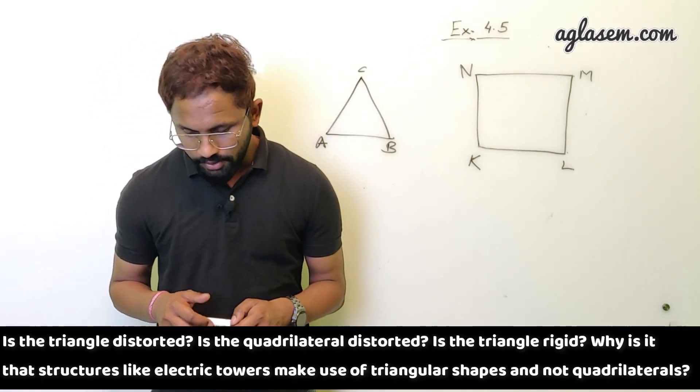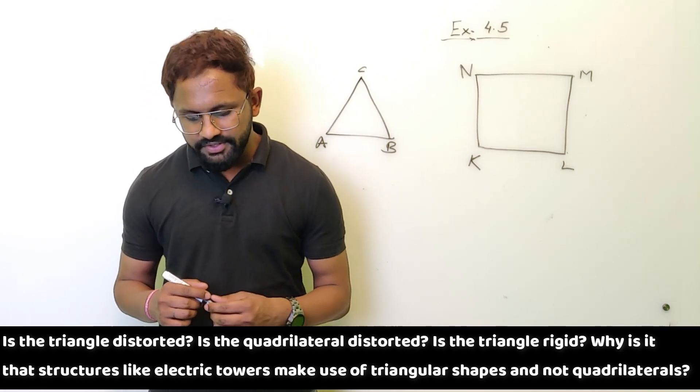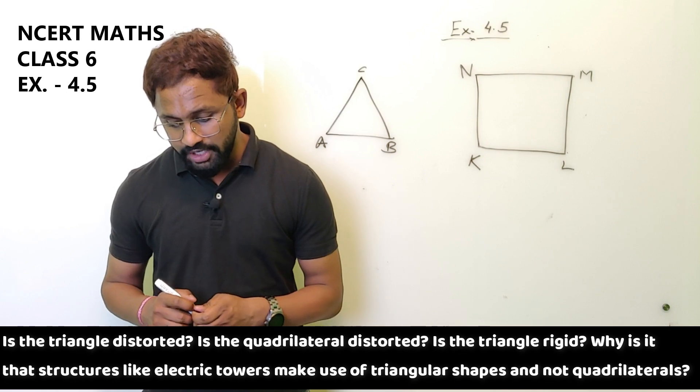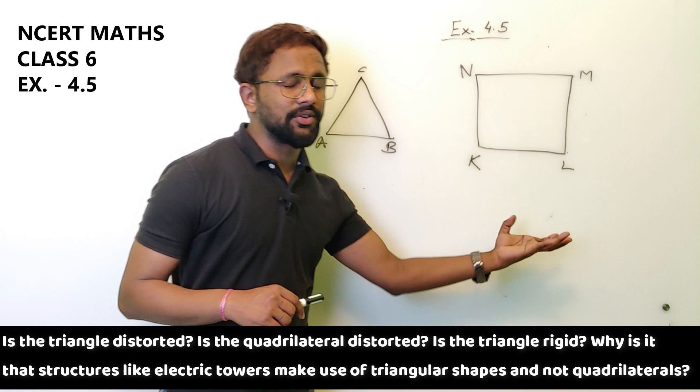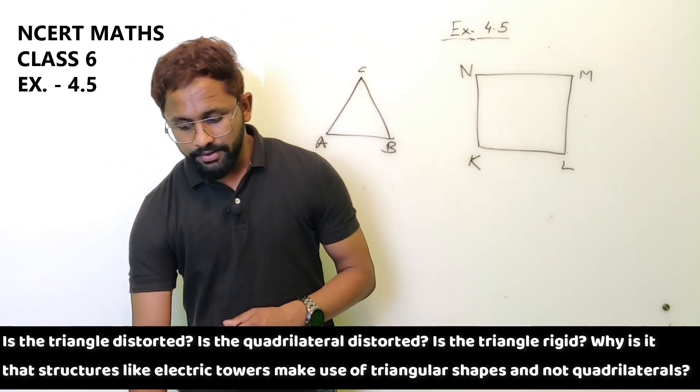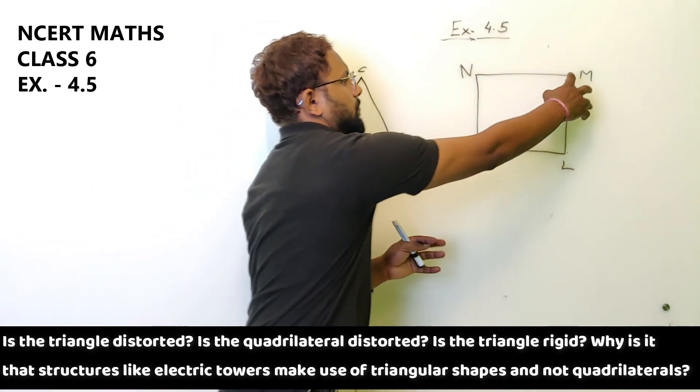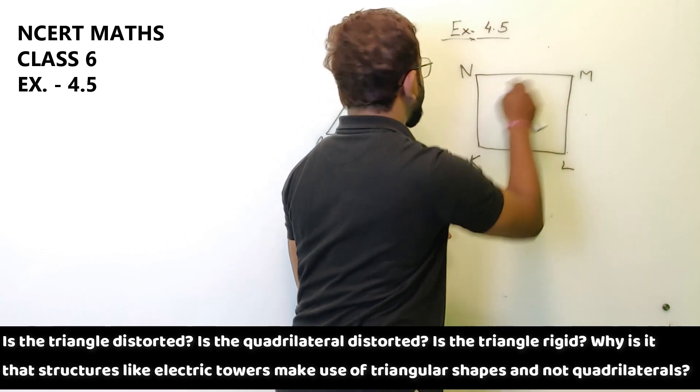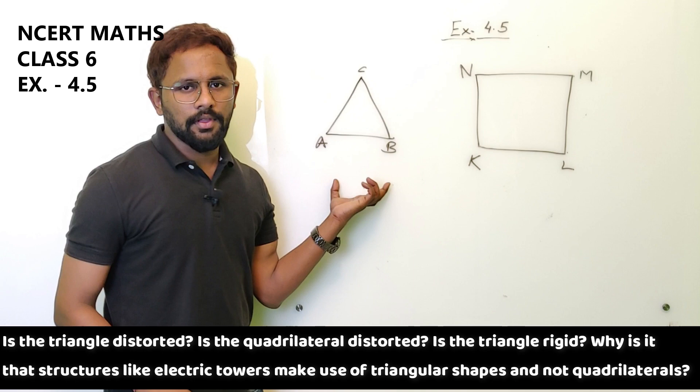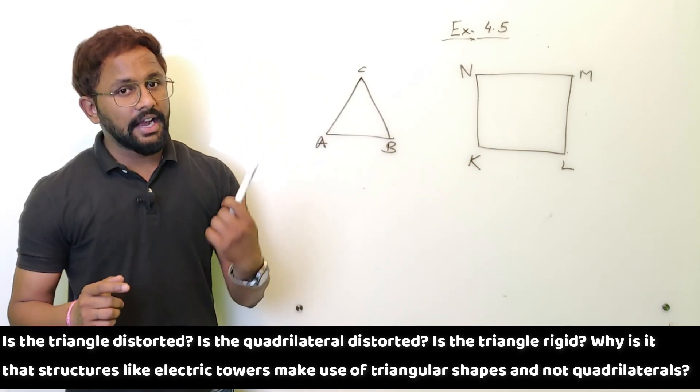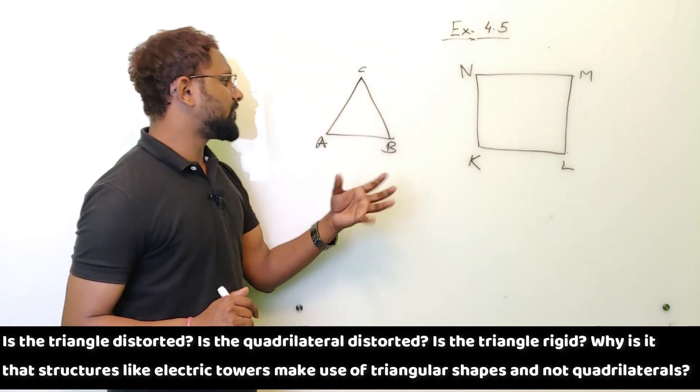Is the triangle distorted? Is the quadrilateral distorted? Is the triangle rigid? Why is it that structures like electric towers make use of triangle shapes, not quadrilaterals? So after doing this experiment, this investigation, you will find that the triangle is not distorted but the quadrilateral is distorted from this place. It will be going in backward direction, but this will not. Because the structures like triangles are rigid, and that is the reason why the electric towers are made of triangle shape, not the quadrilateral shape, because of their rigidity.